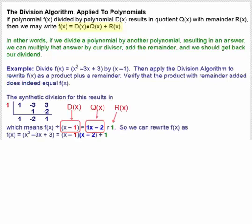And here's an example. We're going to divide x squared minus 3x plus 3 by x minus 1, and then apply the division algorithm to rewrite f as a product plus a remainder. Then we'll verify that this is a correct result.